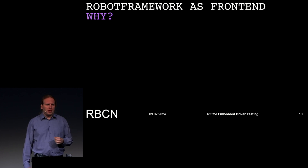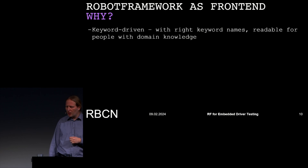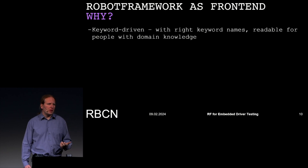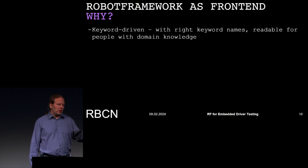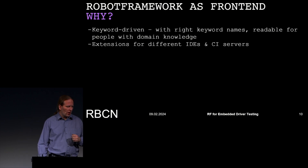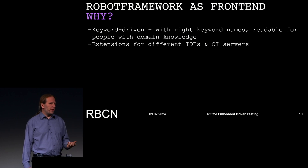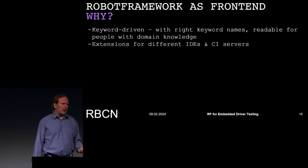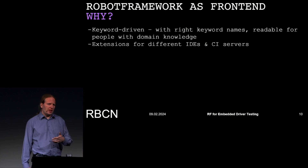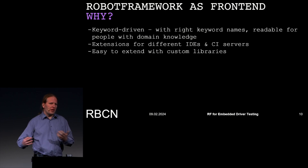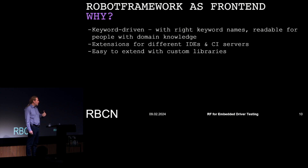So we chose Robot Framework, about five or six years ago. Why? It's keyword-driven. We are targeting developers who know the lowest level parts, and we design keywords with names that they understand, so if someone writes a test and someone else reads it, they can understand what it is doing. It has extensions for different IDEs and CI servers — syntax highlighting, code completion, and all other stuff that makes life easier for testers and developers. Robot Framework is also easy to extend with libraries, which was our goal because we needed to provide a connection to hardware.